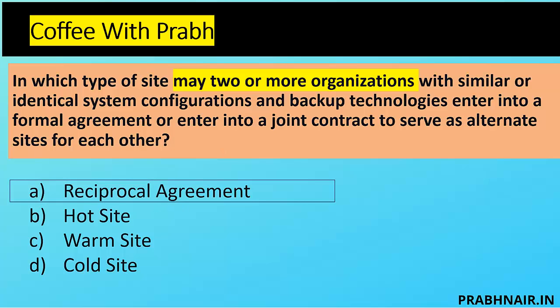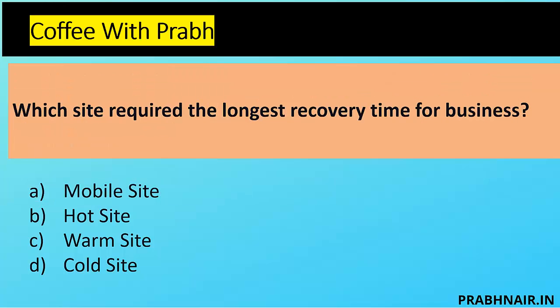Two companies wishing to share their risk and share their site for disaster services is called a reciprocal agreement. The best examples are the hotel industry and hospital/healthcare industry — they share beds in case of disaster so patients can use other hospitals. Hotels that are fully booked can use another hotel through collaboration to satisfy customers and maintain service. The answer is A.